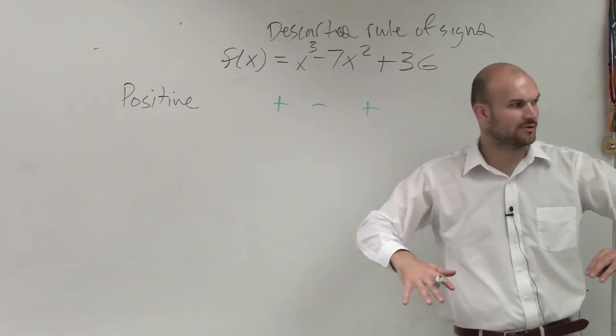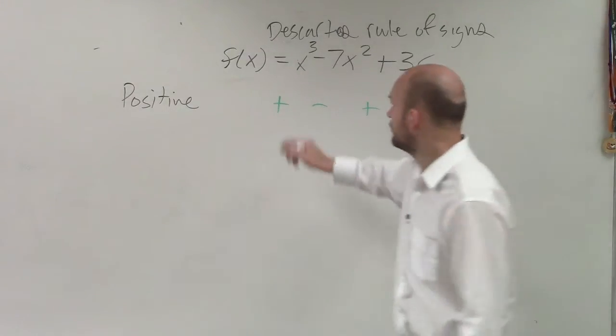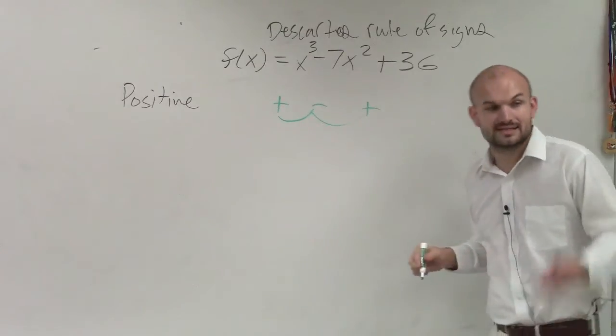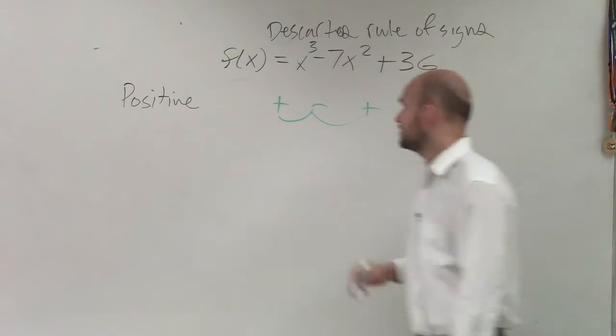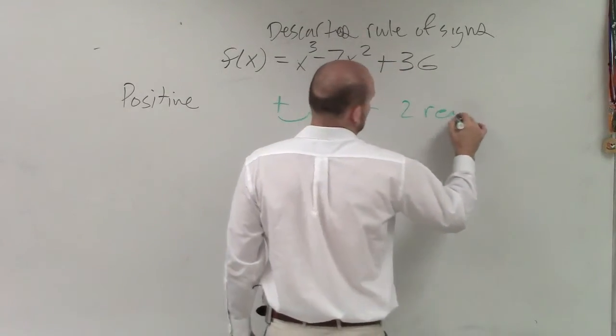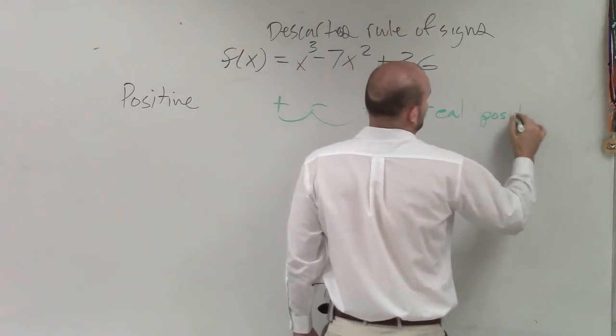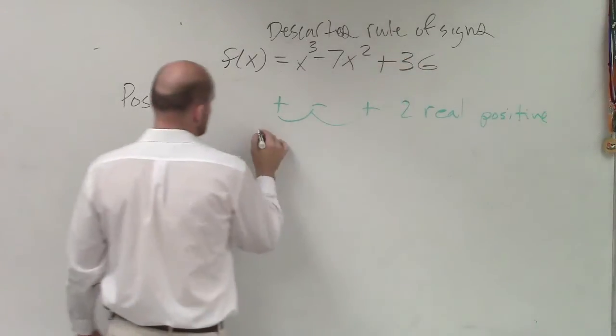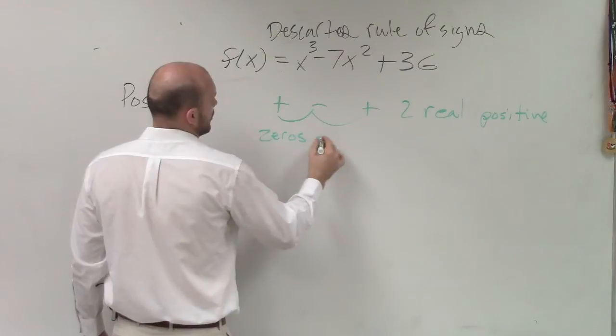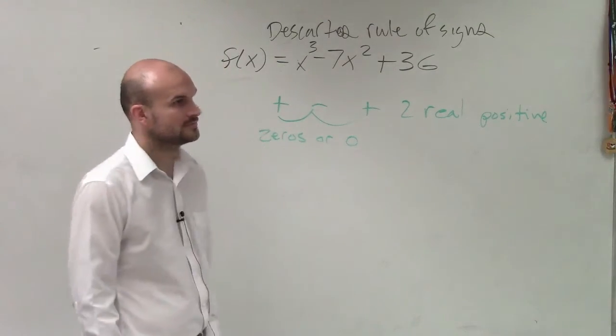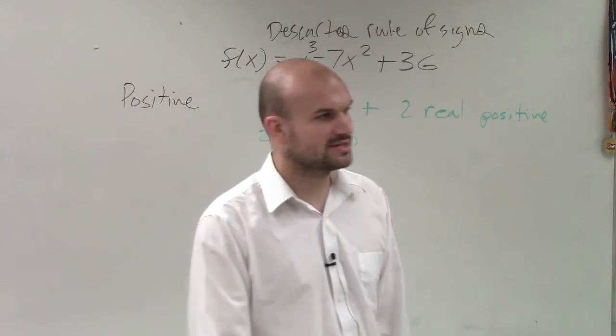Don't care about what the monomials are. I just care about what the signs are. And what we notice is we look at how many times it alternates. In this case, it alternates twice. So therefore, we have two real positive zeros or zero. Two real positive zeros or zero.